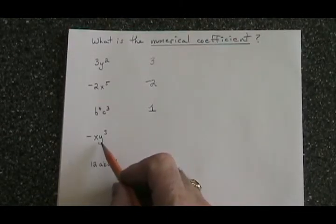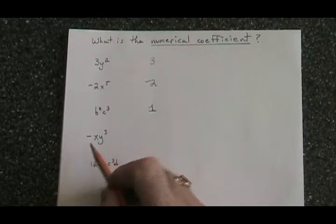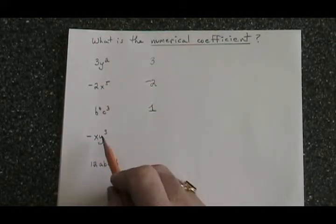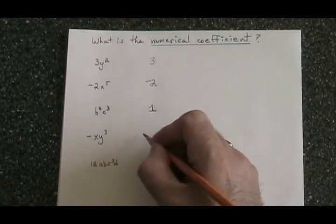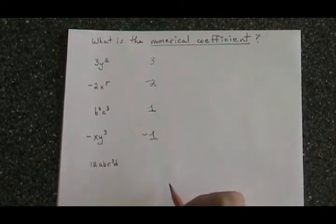In negative xy cubed, we only see the negative sign. There's no number. That means that the numerical coefficient is negative 1, so you have to write negative 1 and don't forget the sign.